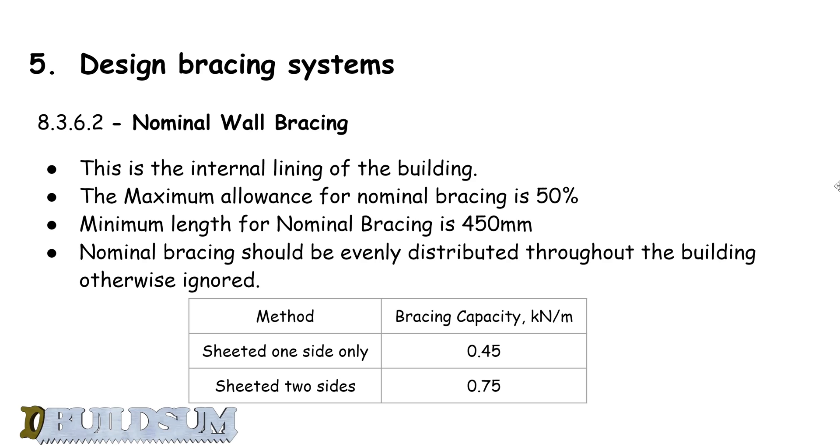So basically what we have to do is work out the length of those walls in the building and then times it by the bracing capacity. That will give us how much resistance the nominal bracing is going to give us.